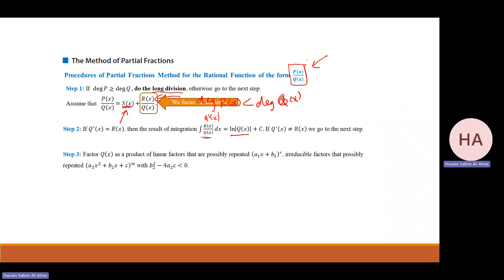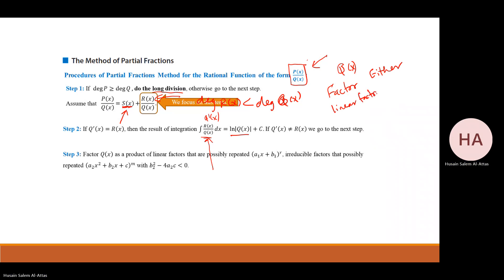Now if R is not the derivative of the denominator, I cannot simply use a u-substitution to get a log. So what I will do is factor Q. There is a rule: any polynomial can be factored either as linear factors, or irreducible quadratic factors — quadratic factors where I cannot reduce them further.